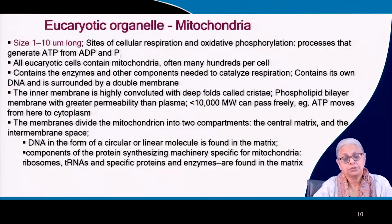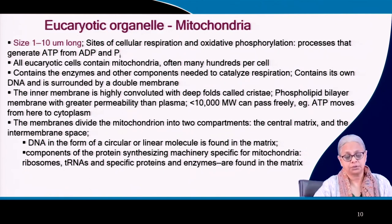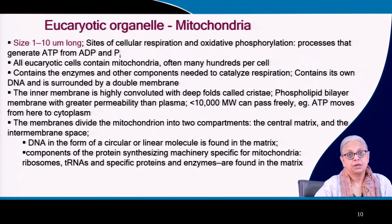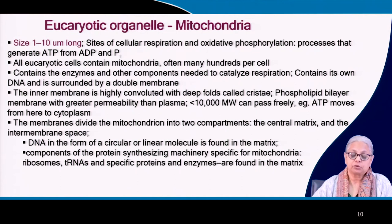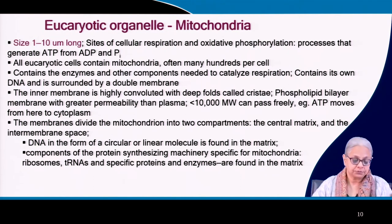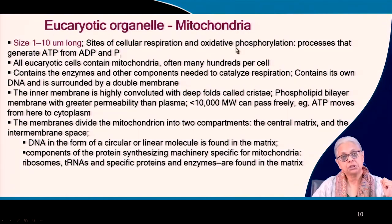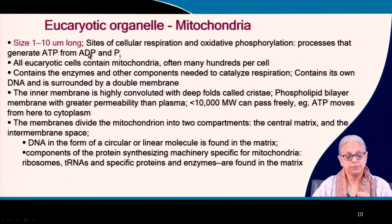Eukaryotic organelles — we have mitochondria and chloroplasts, the other organelles involved in ATP synthesis. Generation of ATP is done by the mitochondria as well as the chloroplasts. Chloroplasts exist in photosynthetic organisms and mitochondria in non-photosynthetic organisms or eukaryotes. The size of mitochondria is about 1 to 10 microns long. These are the sites of both cellular respiration and oxidative phosphorylation, which we will be covering in detail in module 9. Cellular respiration and oxidative phosphorylation help eukaryotes generate ATP from ADP and phosphate.